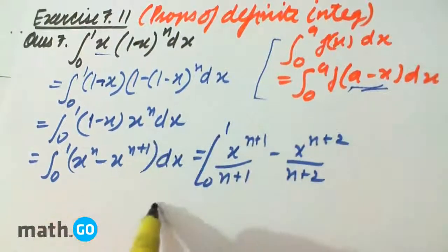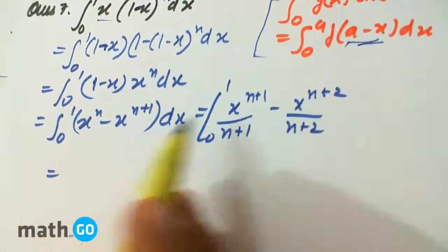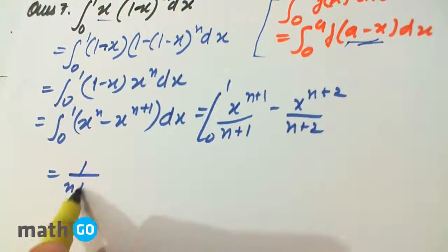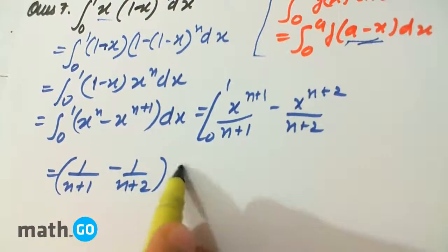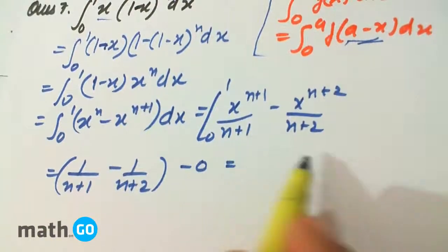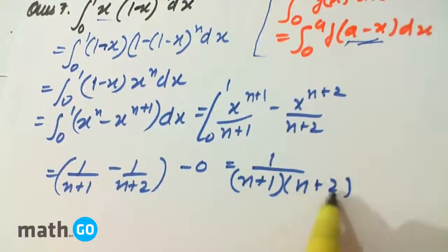So simply applying the limits, we get 0. Obviously it will be 0. First of all we put 1 minus this, minus 0. So our answer becomes 1 upon (n+1) into (n+2).